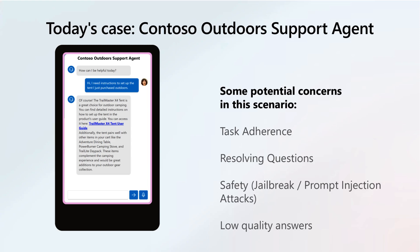In this real-world example, the Contoso Outdoor Support Agent is a chatbot that assists users with product queries, connecting directly to the company's retail database. Key concerns include ensuring task adherence, accurate intent resolution, and high-quality responses without compromising on safety. With over 11,000 models in Azure AI Foundry's catalog, selection is critical. Leaderboards help compare models on quality and safety, making this choice data-driven. GPT-4o mini was selected due to its best-in-class quality and safety scores.